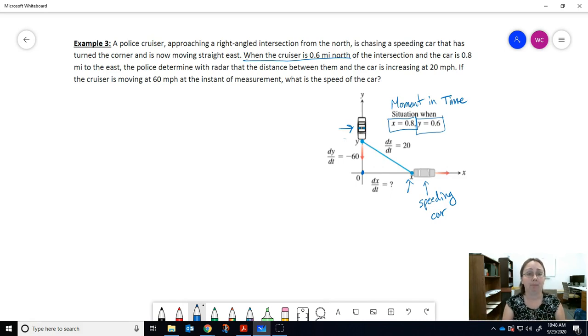The police determine with radar that the distance between them and the car is increasing at 20 miles per hour. So from the police car to the speeding car, this diagonal line the hypotenuse, they know what the rate of change is. That's the 20 miles per hour, they're giving you that information.